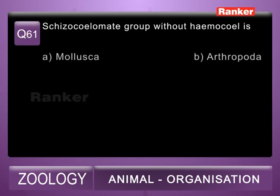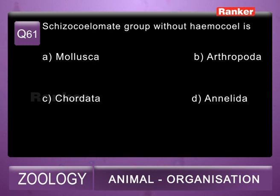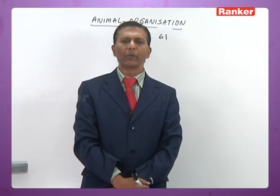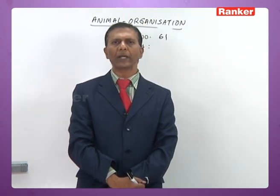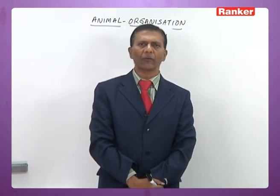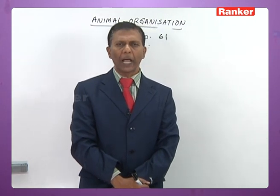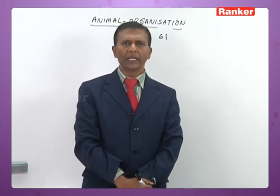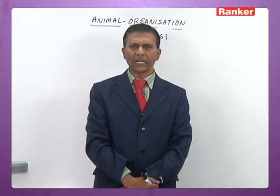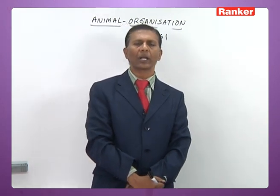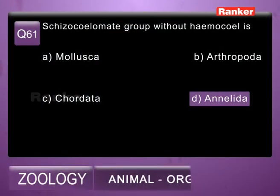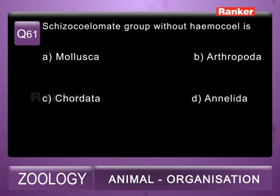Question 61: schizocoelomate group without hemocele is A) Mollusca, B) Arthropoda, C) Chordata, D) Annelida. In Mollusca and Arthropoda, the schizocoel is modified into hemocele due to the presence of an open blood vascular system. Annelida is the schizocoelomate group with a distinct schizocoel without modification because they have a closed blood vascular system. So the 61st question correct answer is D, Annelida.